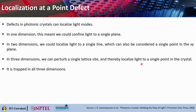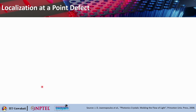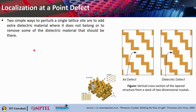Light will be trapped in all three dimensions. The point defect pulls a state from the continuum above or below the bandgap into the gap itself, resulting in a localized mode. Two simple ways to perturb a single lattice site in a three-dimensional photonic crystal are: to add extra dielectric material that does not belong, or to simply remove some of the dielectric material that should be there. You can create an air defect by removing dielectric material, or a dielectric defect by adding extra dielectric.